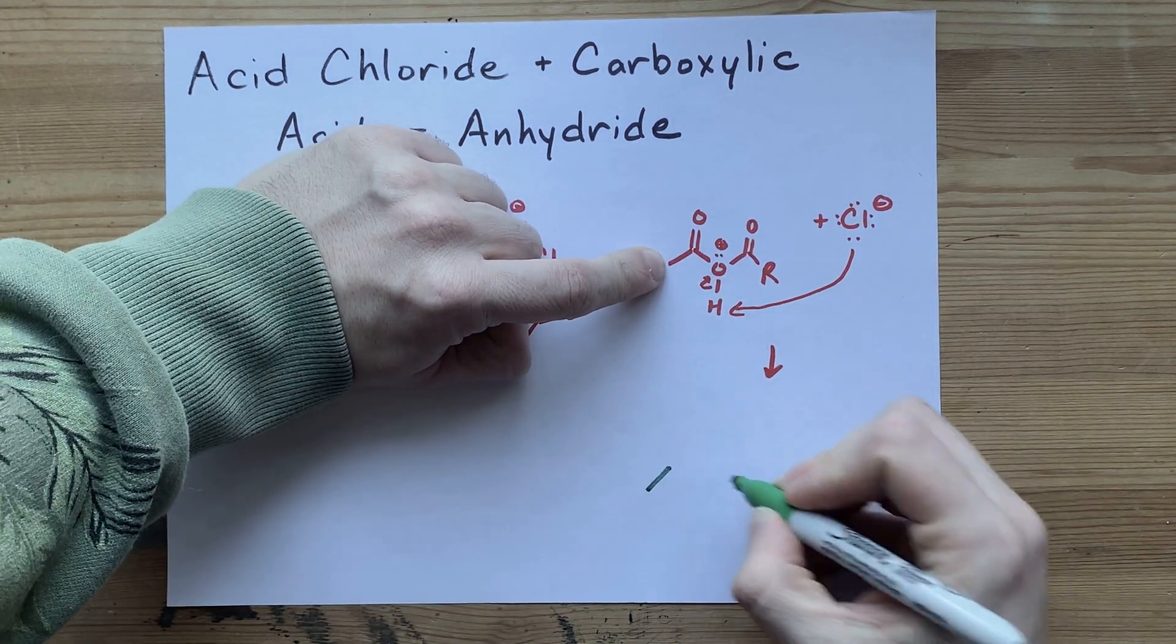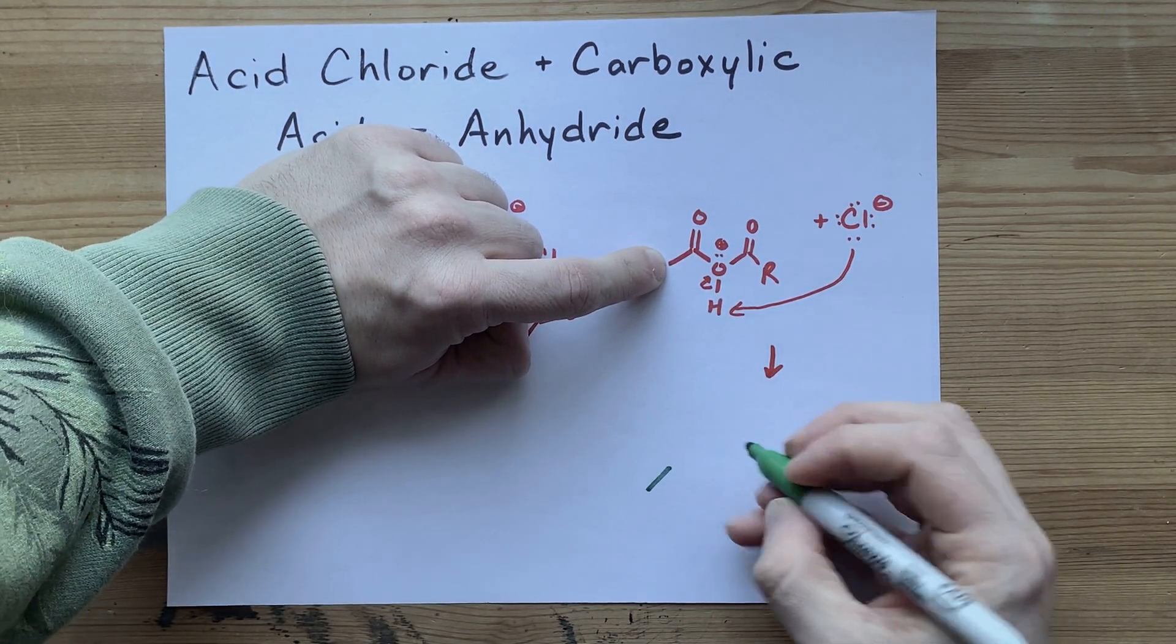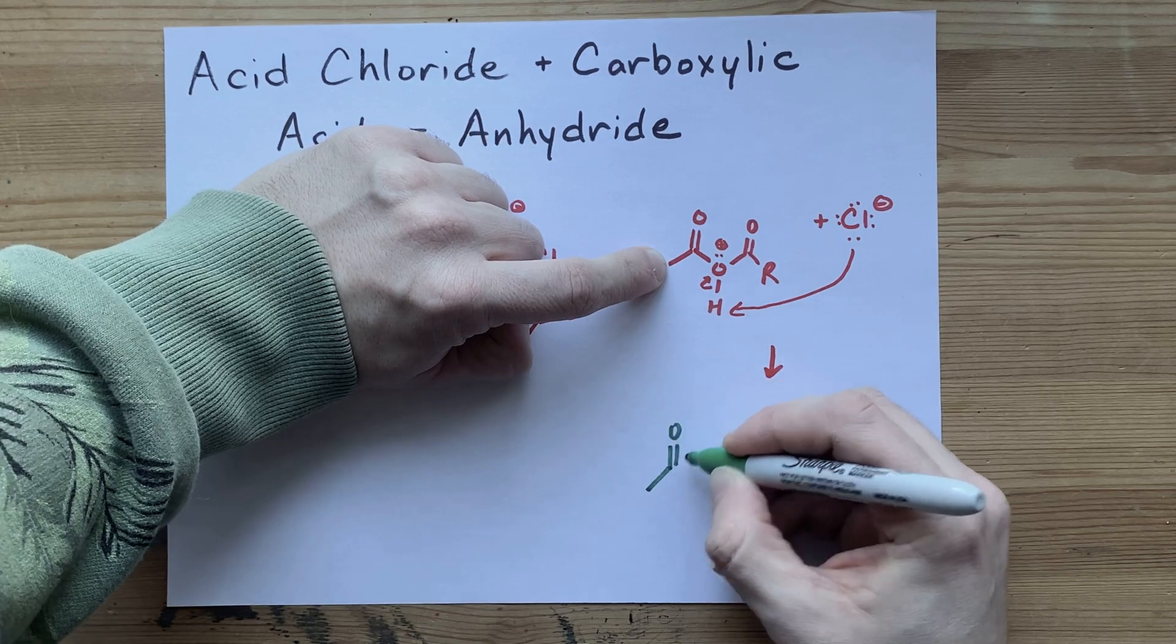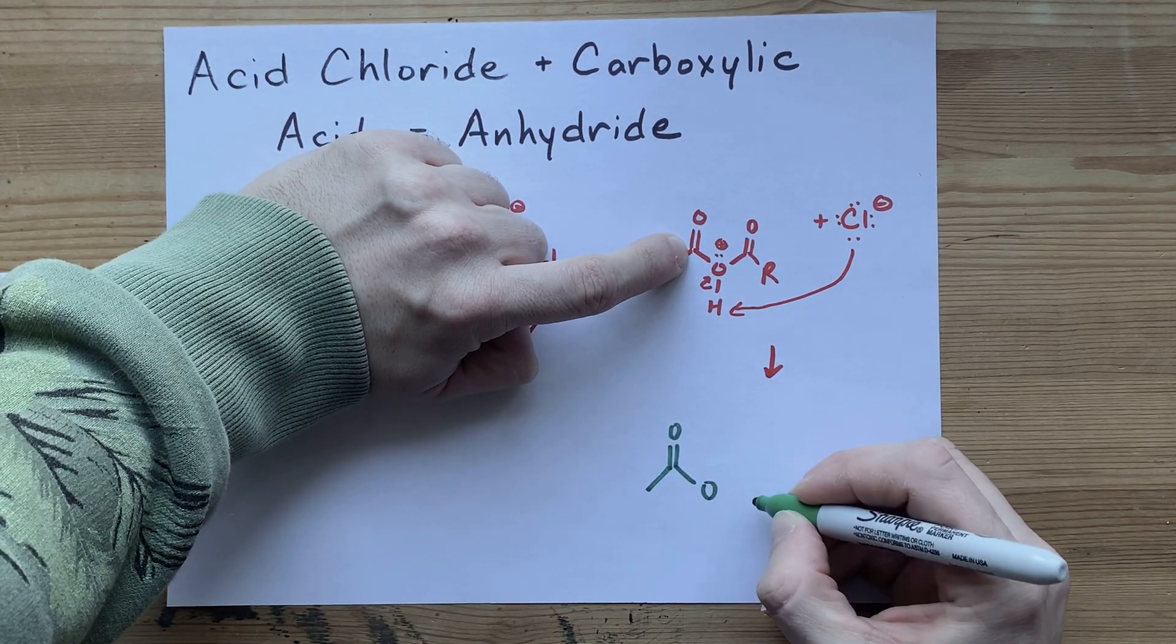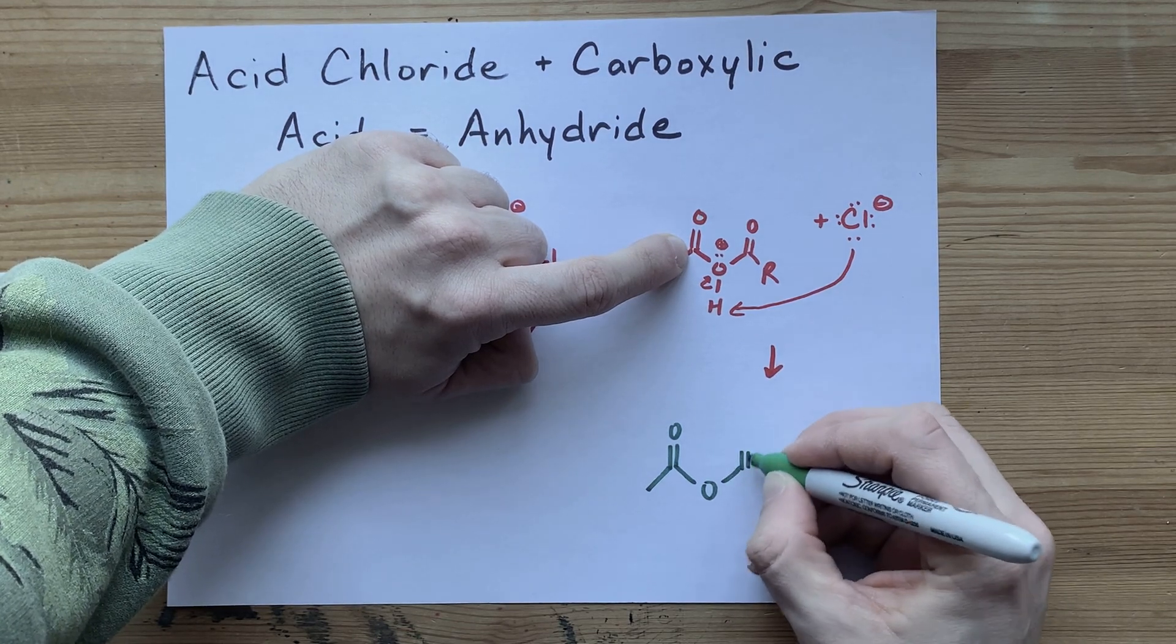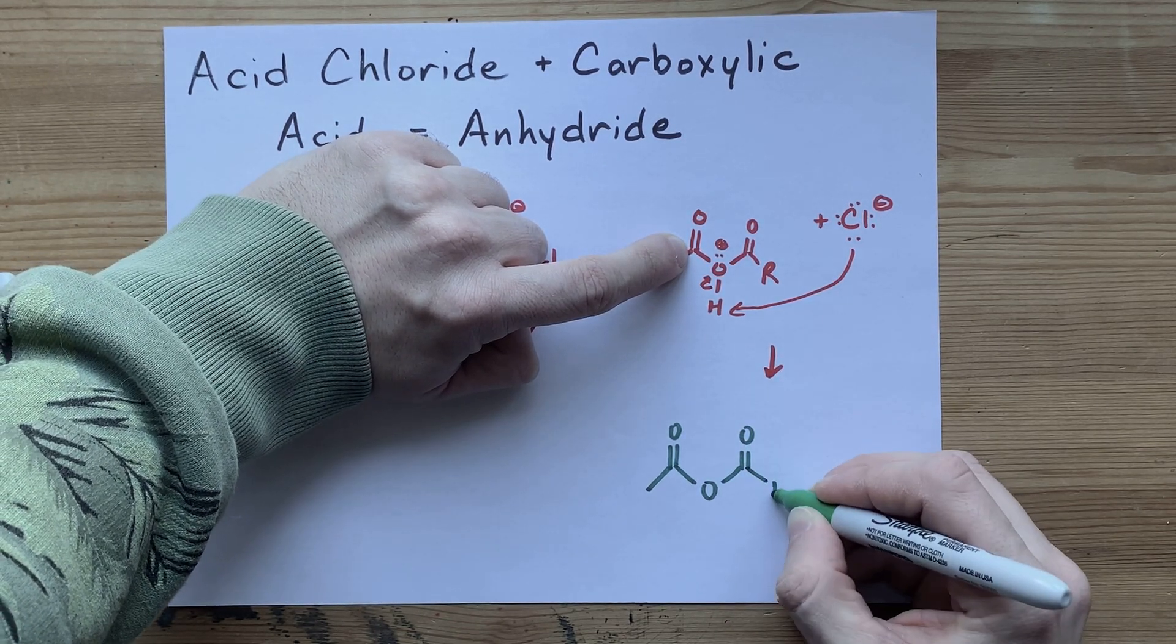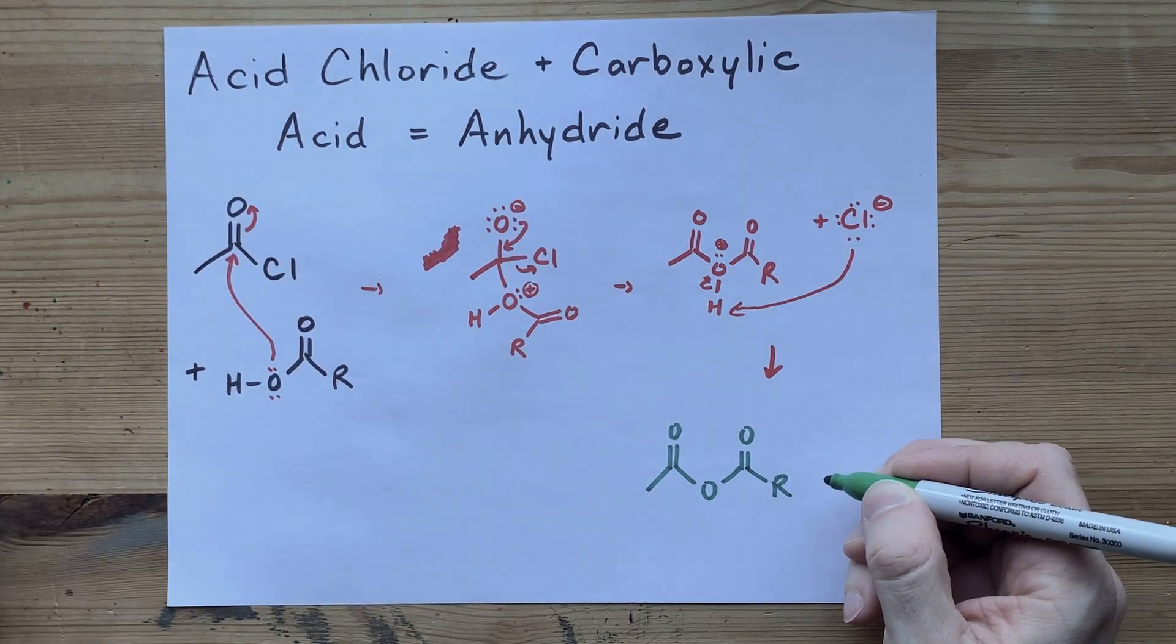Take a look. You've got that carbon-carbon bond. You've got your double bonded oxygen that came from the acid chloride. A single bond to oxygen. Another single bonded to another carbonyl group, which itself has a longer R chain on it.